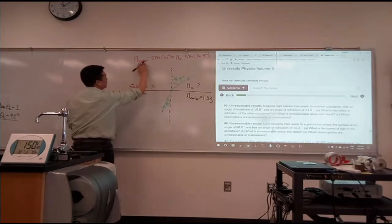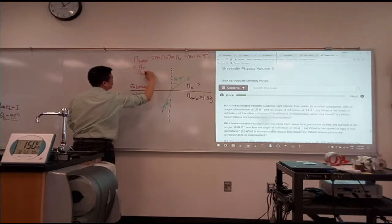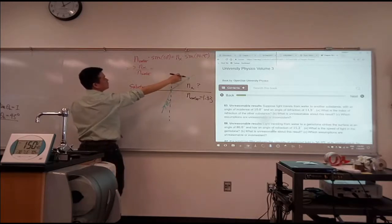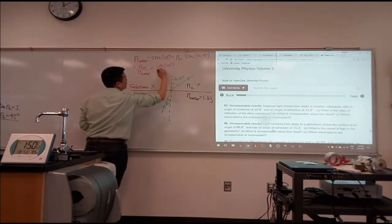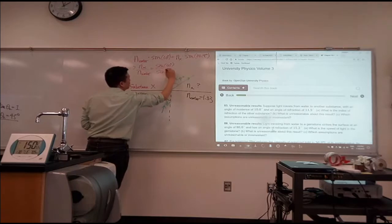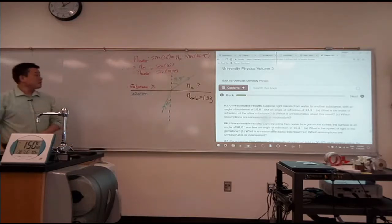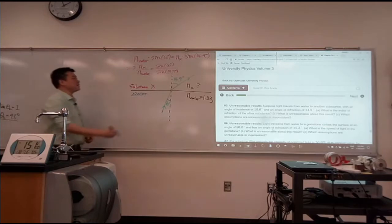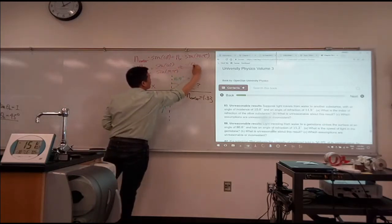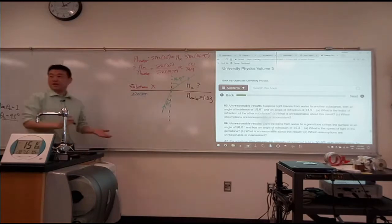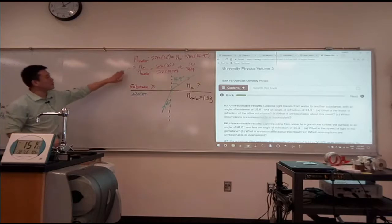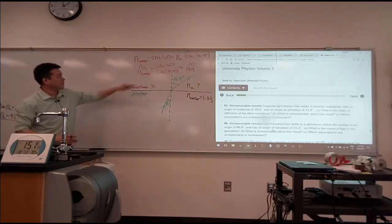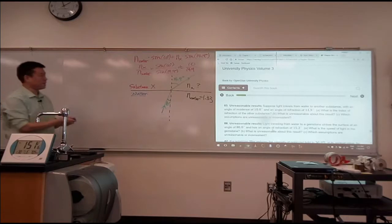What should nx over n water be? It should be equal to, let's see, move this over. Sine of 10 degrees over sine of 14.9 degrees, which I'm going to claim is approximately equal to 10 over 14.9. And you can check me if you want. Before I finish the calculation, by writing out the left-hand side, I can see what's going to be unreasonable about it.